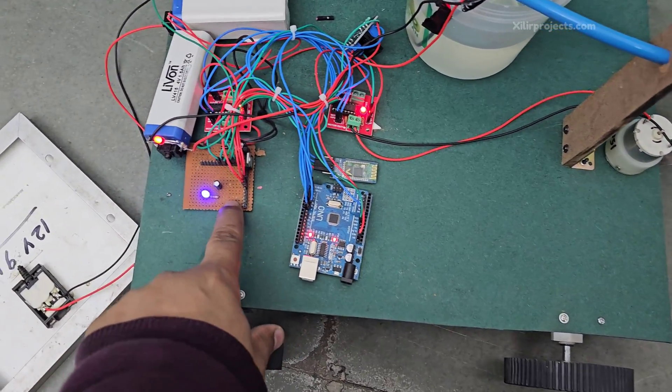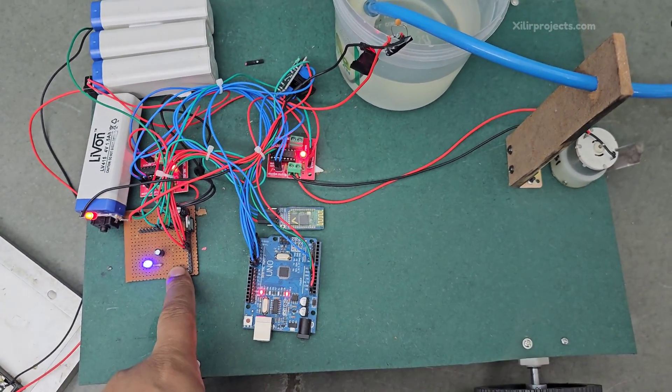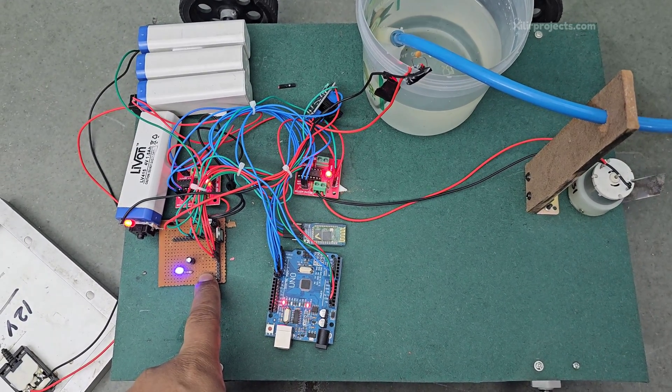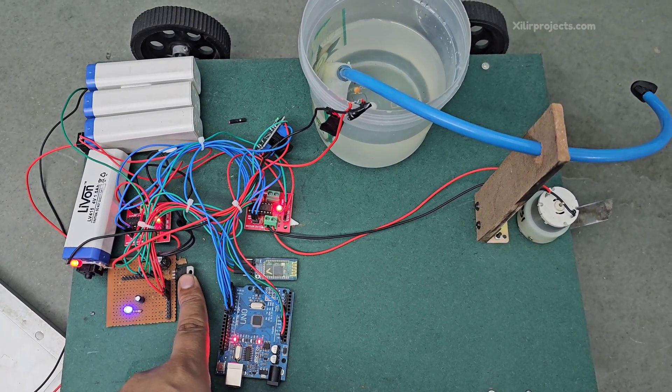And this is power supply which is regulating 12V to 5V because we need 5V. And this is the function of this 7805 IC.